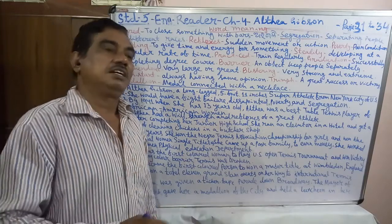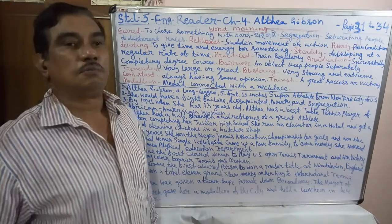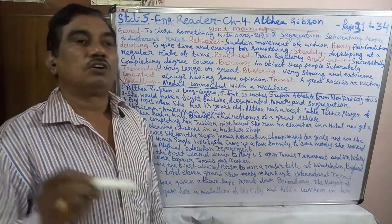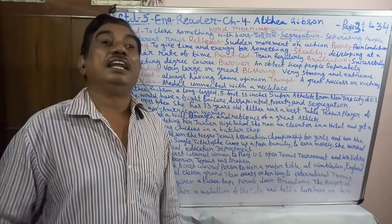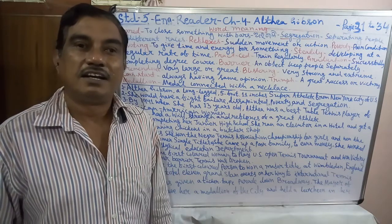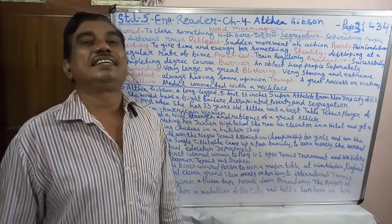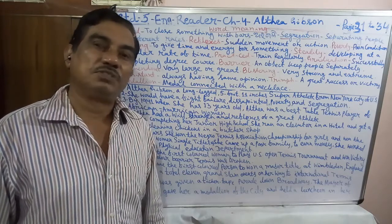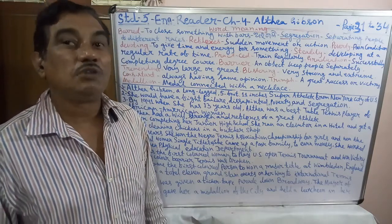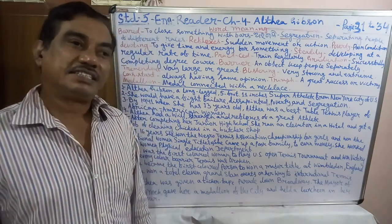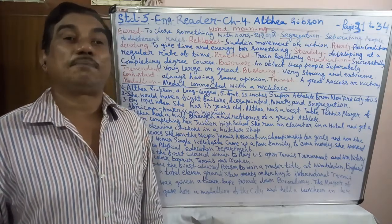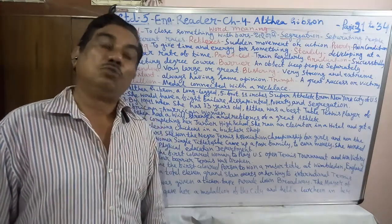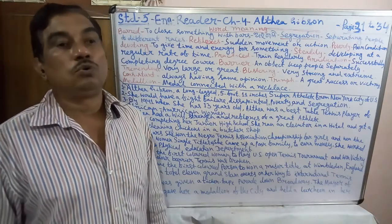Her willpower, strength, and reflexes took her to become a great tennis athlete. After completing her junior high school, she ran an elevator in a hotel and got a job cleaning chicken in a butcher shop, because she came from a poor family. At 16 years old she won the Negro Tennis Association championship for girls and the national women's singles titles.